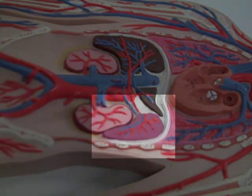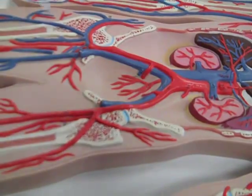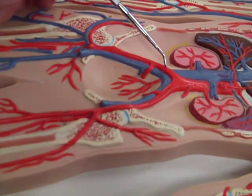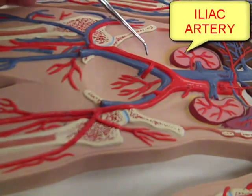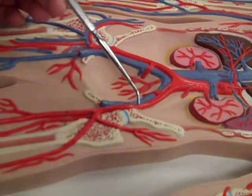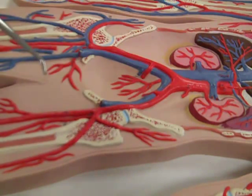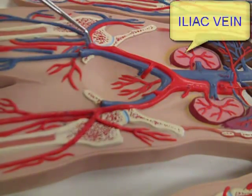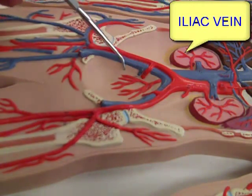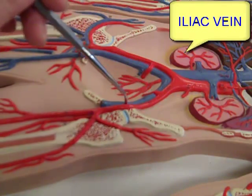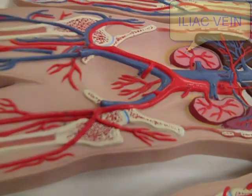That's the spleen. If we move to where the abdominal aorta splits, we're going to go to the right iliac artery, nice and red, and the corresponding left iliac artery. That brings blood to the legs. Carrying blood back from the legs, we have the right iliac vein and the left iliac vein, nice and blue.